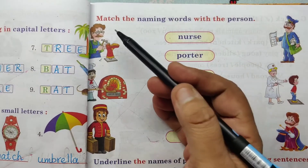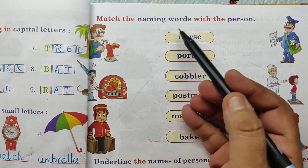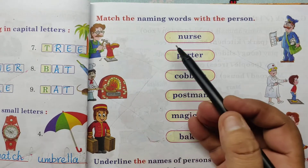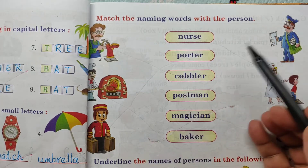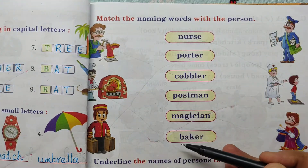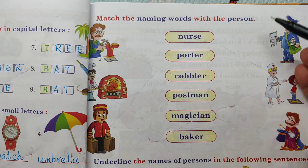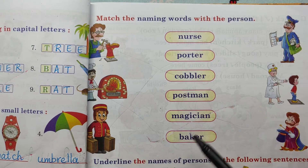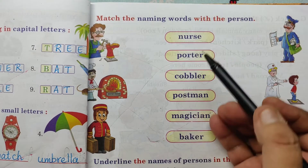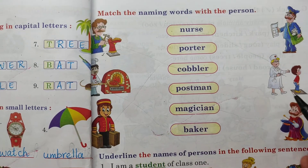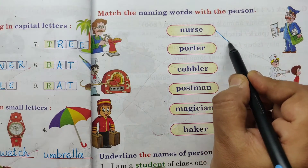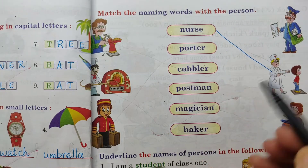Let us match the naming words with the person. Match the naming words with the person. Here naming words are here, here persons. Nurse. N, U, R, S, E. Nurse. She is a nurse. Draw a line. Nurse.